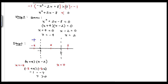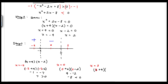For the next test value we use 0, which is usually the easiest: (0 + 4)(0 − 2) = 4 times negative 2 = negative 8, which is less than zero. So numbers between negative 4 and 2 are negative. The last test value is x equals 3: (3 + 4)(3 − 2) = 7 times 1 = 7, which is greater than zero. Numbers to the right of 2 are positive.